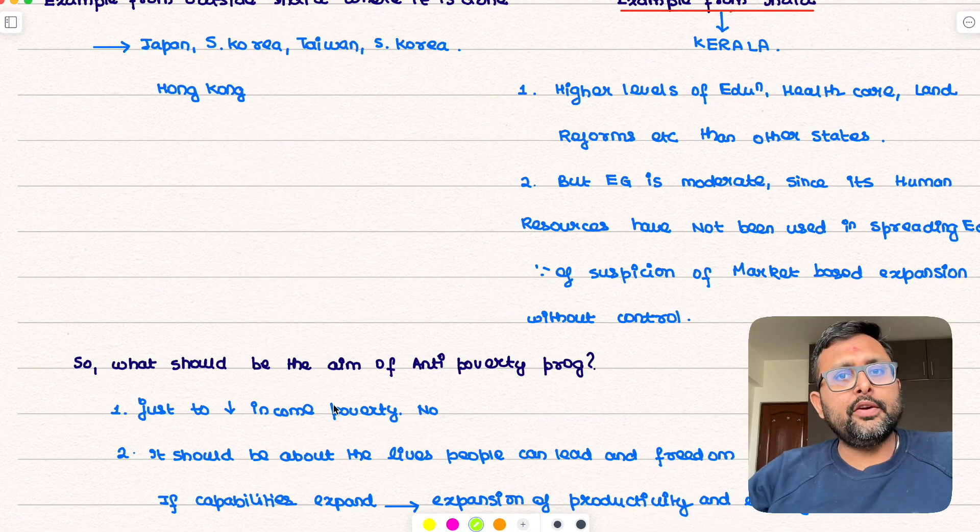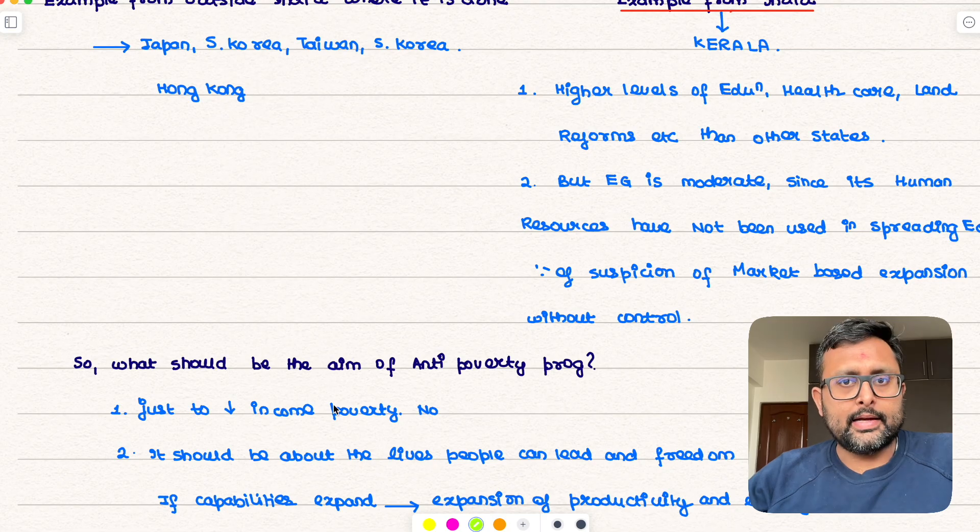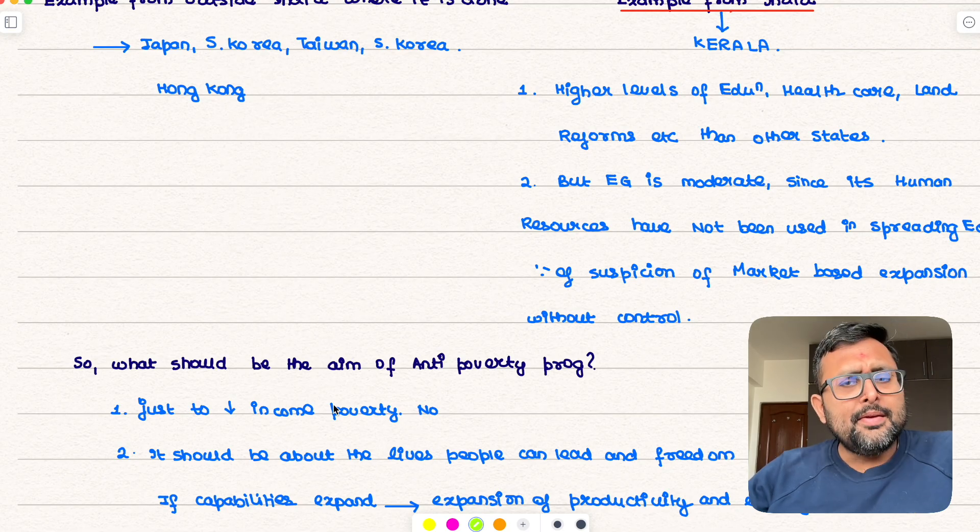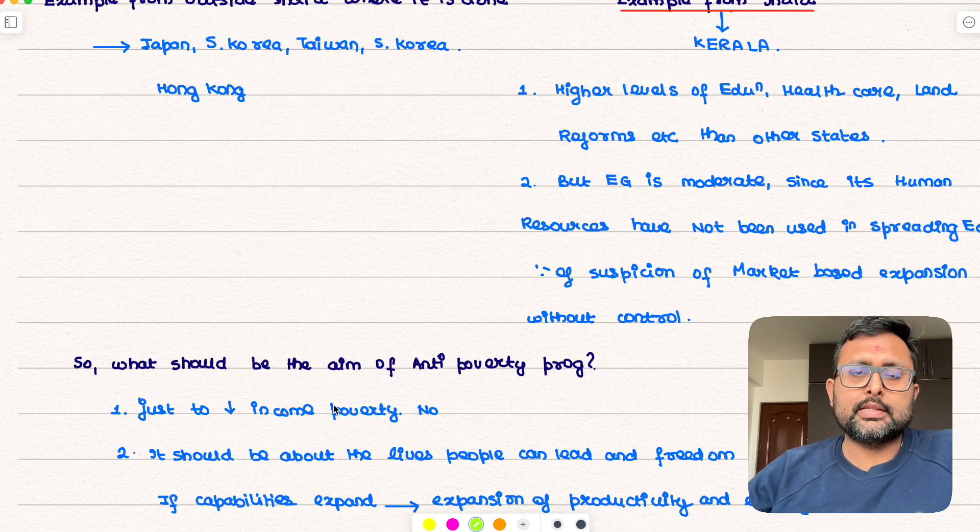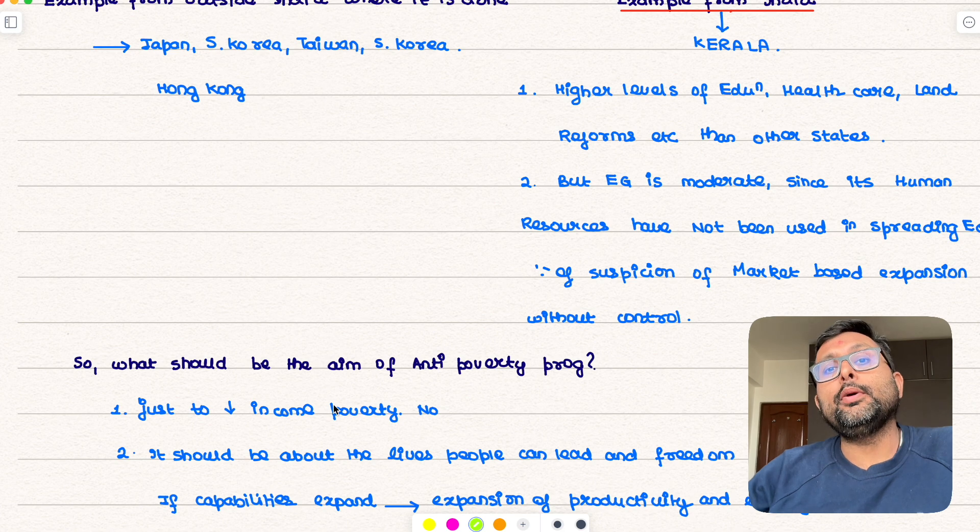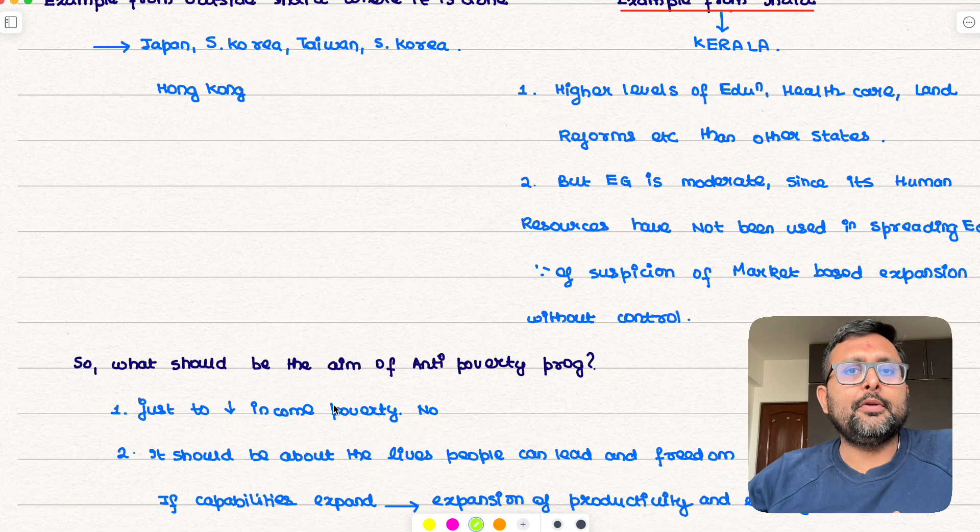Kerala has the higher levels of education, it has better health care and it has better land reforms than most of the other states. So in terms of social infrastructure it is ranking quite high as compared to the other states in the country. Other states have maybe better economic growth.